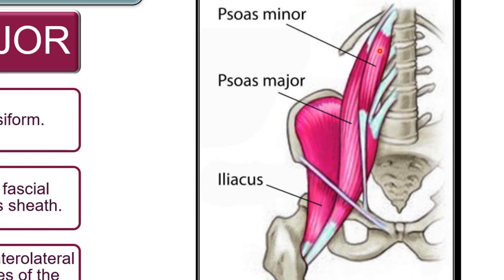Running on top of it is the psoas minor muscle, but our focus here is the psoas major. It is enclosed in a fascia which we call the psoas sheath — a fascia wrapping around the psoas major muscle. This muscle covers the anterolateral surface of the bodies of the lumbar vertebrae, running from the anterior and lateral parts of these bones.